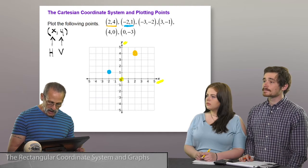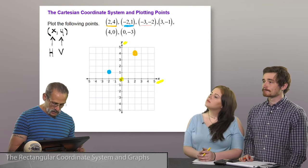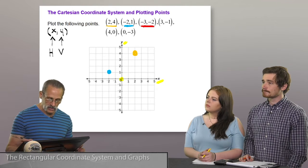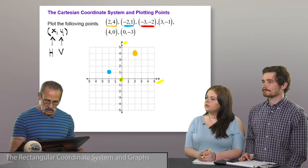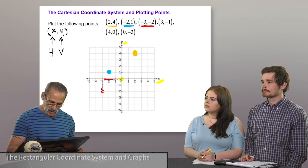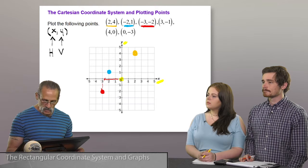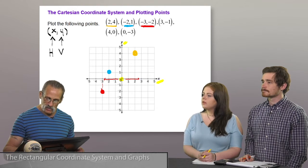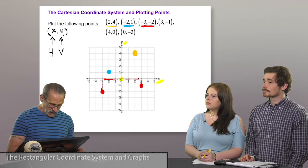Now that we have the pattern, let's speed it up. For the point (-3, -2): x is negative 3, y is negative 2, so we go left 3 units and down 2, and we have the point. For (3, -1): we go to the right 3 units, then down 1 unit. Very good — we have our points.